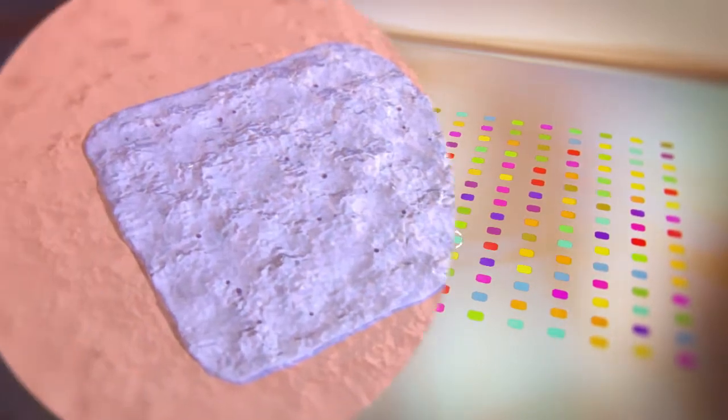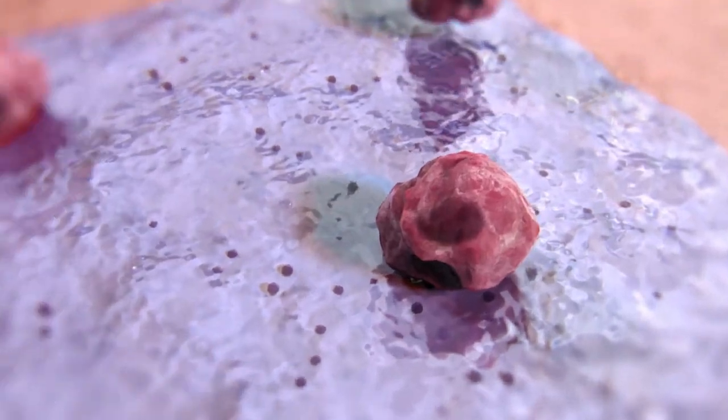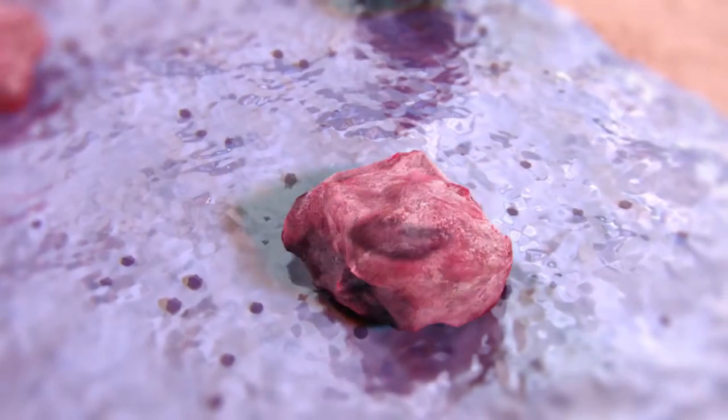The chip surface is covered by a lipid transfection reagent to promote uptake of the genetic material. Cells are seeded on the glass slide, adhere to the printed surface and cover the spots.